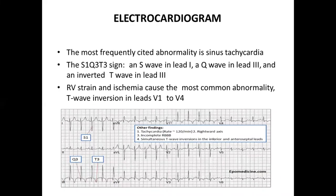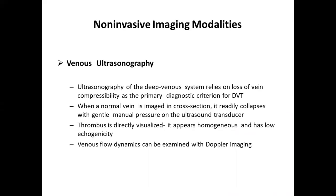Non-imaging diagnostic modalities also include ECG, where the most frequently cited abnormality is sinus tachycardia. You can also see an S wave in lead I, Q wave in lead III, and inverted T wave in lead III — the S1Q3T3 pattern. Due to right ventricular enlargement and dysfunction, you can see right ventricular strain and ischemia shown by T-wave inversion in leads V1 to V4. Venous ultrasonography can also be used, relying on loss of vein compressibility as the primary diagnostic criterion, with Doppler imaging to assess venous flow dynamics.